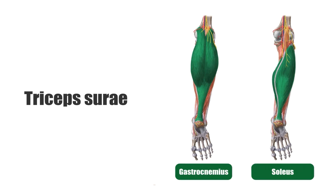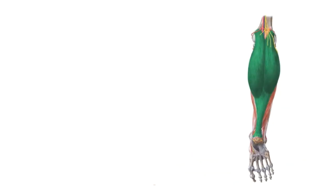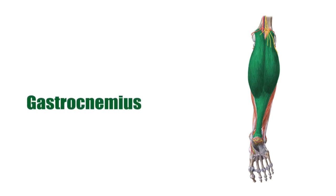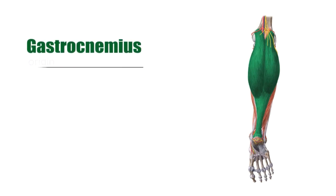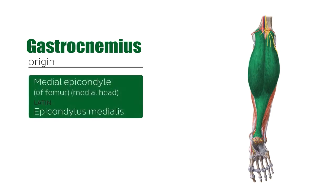We're going to start off with the gastrocnemius, highlighted in green. In terms of origin points, one of the heads is going to be originating from the medial epicondyle of the femur. As you can see here, this is the medial epicondyle, and the medial head of the gastrocnemius is originating from this portion of the bone.